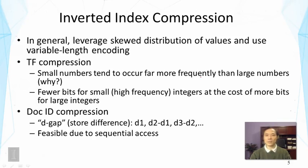For document IDs in postings, the distribution is not skewed, so we use a trick called d-gap: store the difference between adjacent document IDs instead of the IDs themselves. If a term matches many documents, the gaps between consecutive document IDs will be small, producing many small numbers. If a term appears in only a few documents, the gaps are large, but those large numbers will not be frequent. This creates a skewed distribution that allows effective compression.